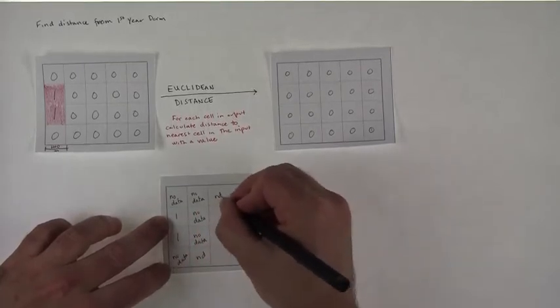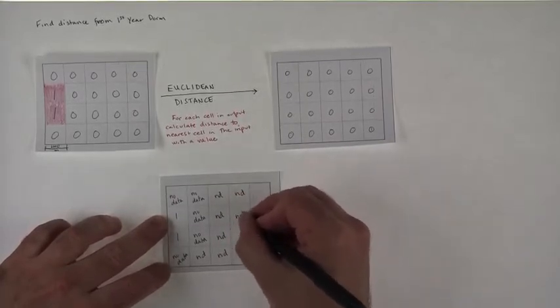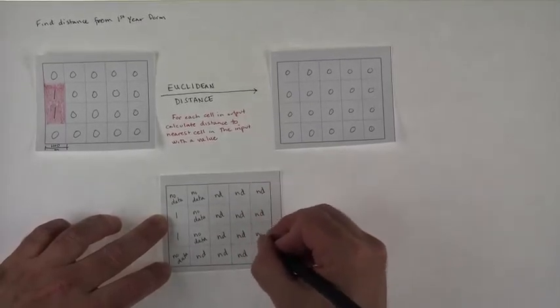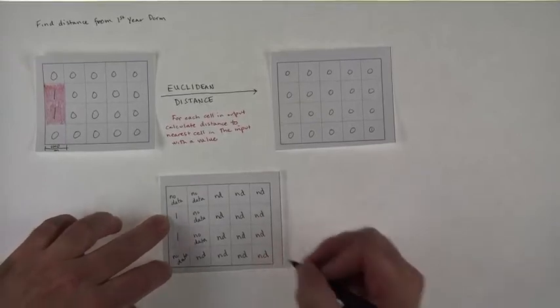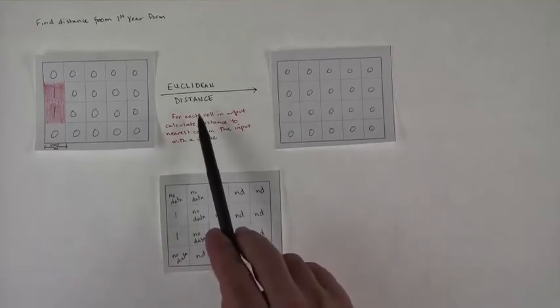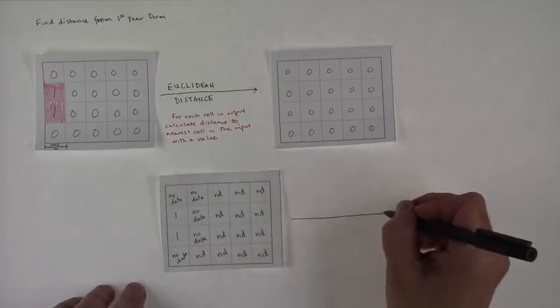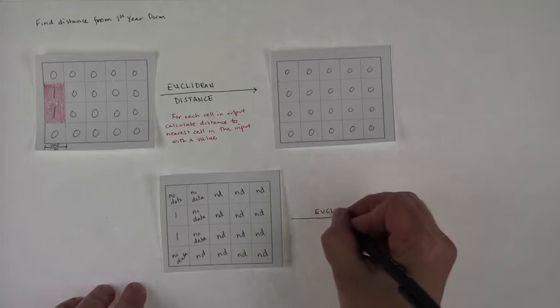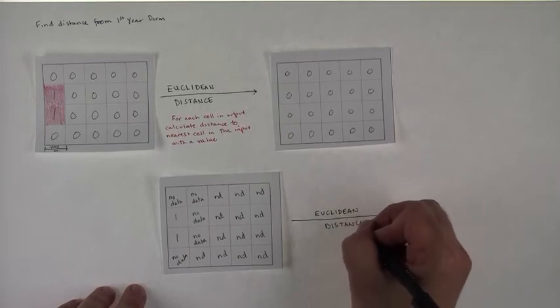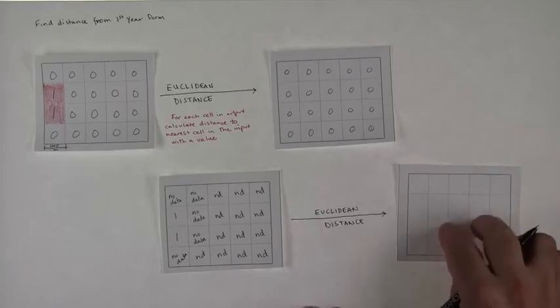See where I'm going, is it okay if I just write nd? So now if we calculated the distance, with this as our input, we're going to get something that we actually are happier with.